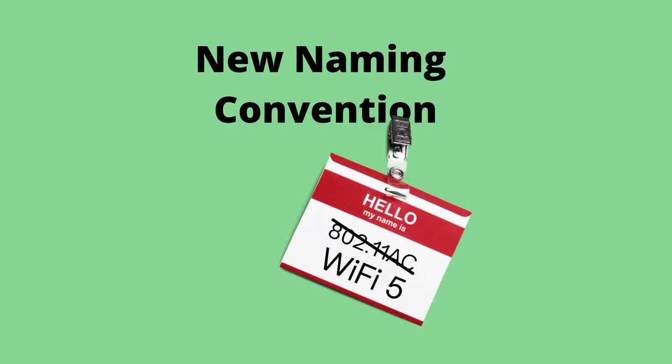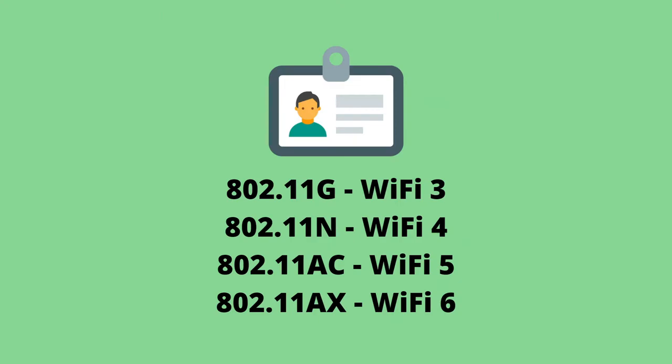In 2018, the Association of Wireless Networking — or IEEE — decided to make the leap from the alphabet soup of wireless protocols to an easier-to-remember system of numbers. So now, 802.11G is known as Wi-Fi 3, 802.11N is Wi-Fi 4, AC is Wi-Fi 5, and AX is Wi-Fi 6.